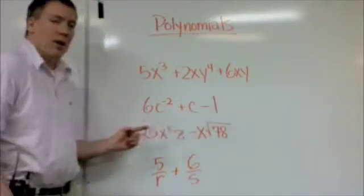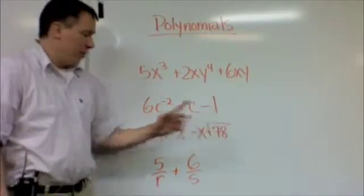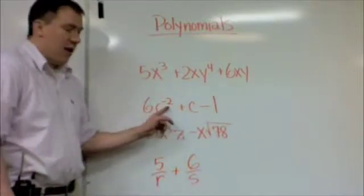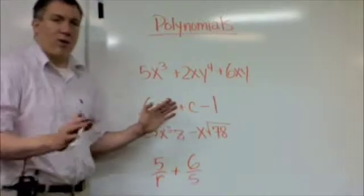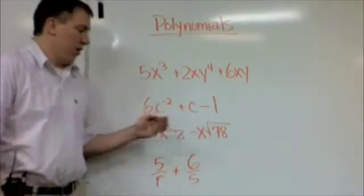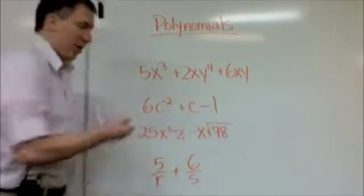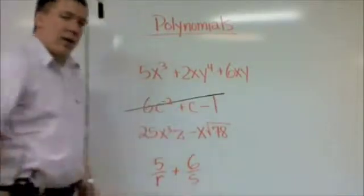This one here, these two are monomials, but this one here is not because of the negative 2 power. Again, you have to have a whole number, 0, 1, 2, 3, 4, 5, 6, and so on. So this whole thing is not a polynomial. It doesn't make the cut.